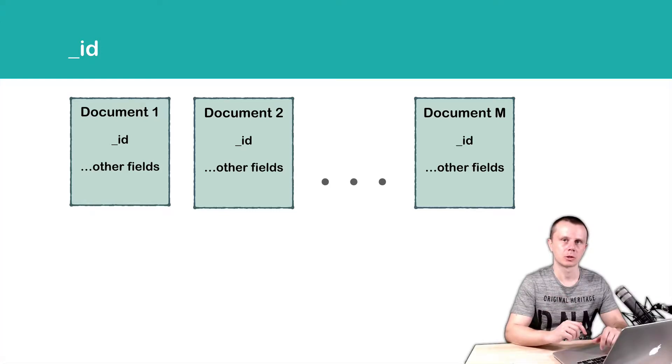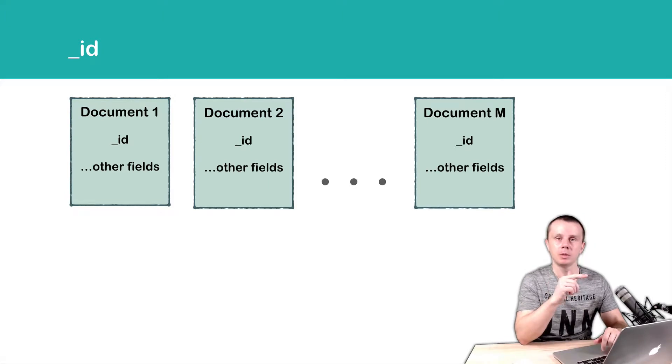Now it's time to talk about underscore ID. What is this? In MongoDB, each document must have a unique identifier.